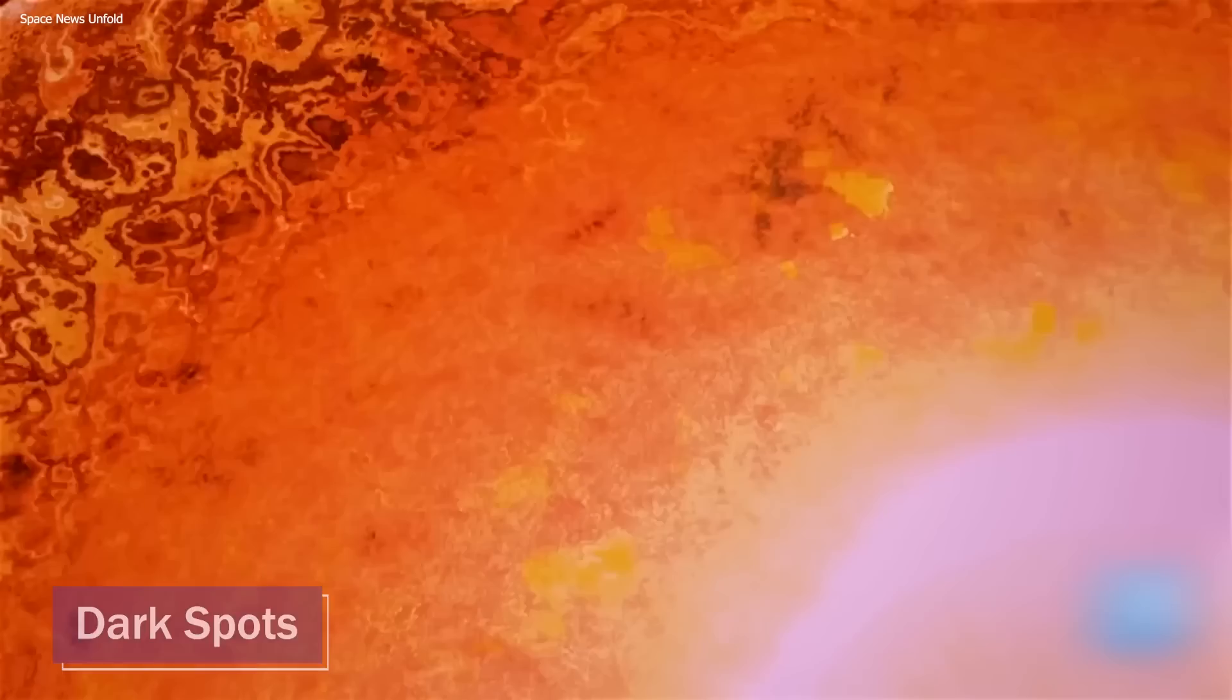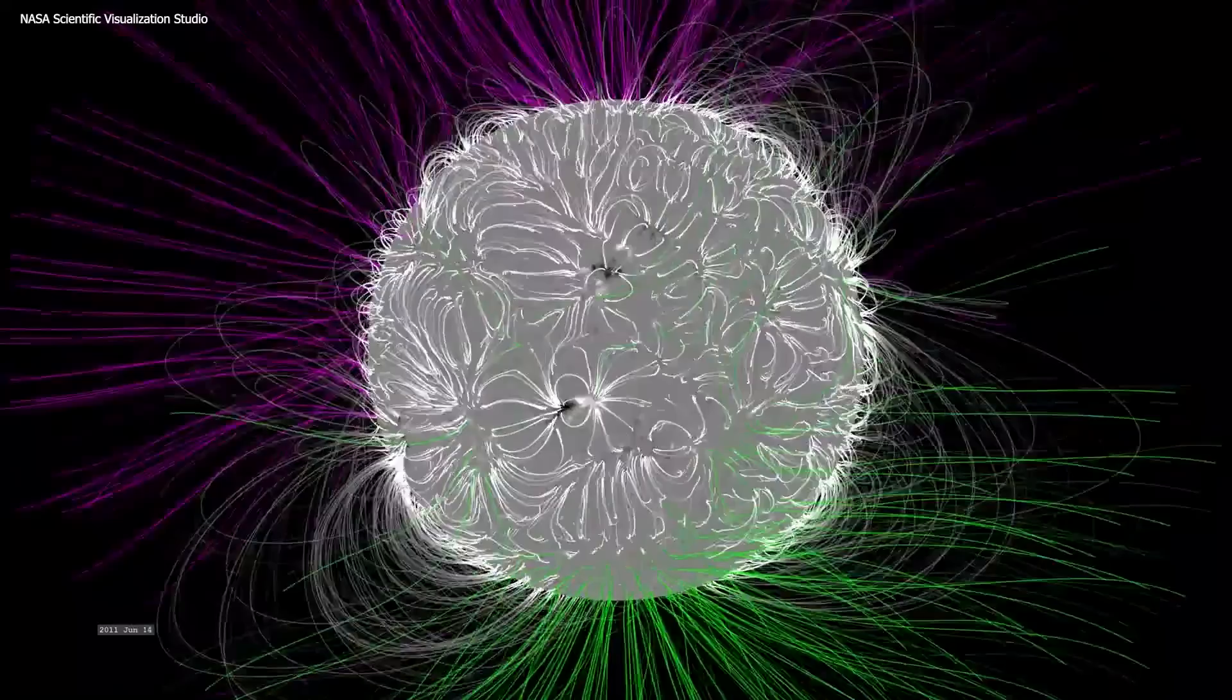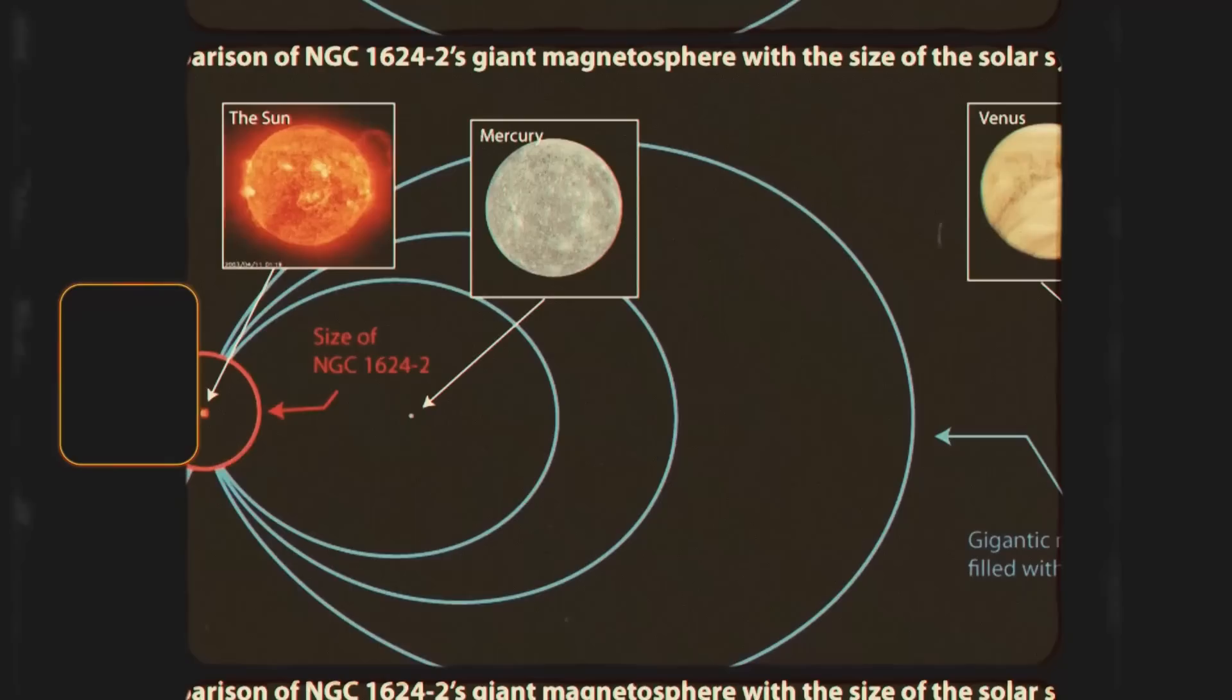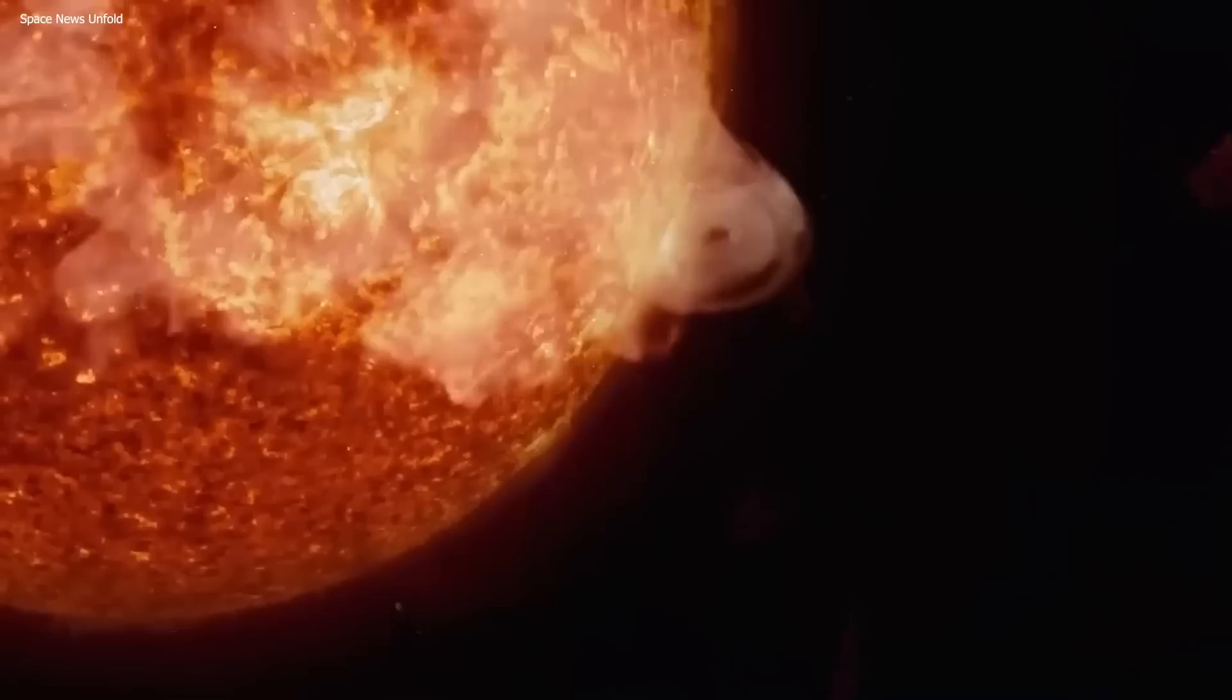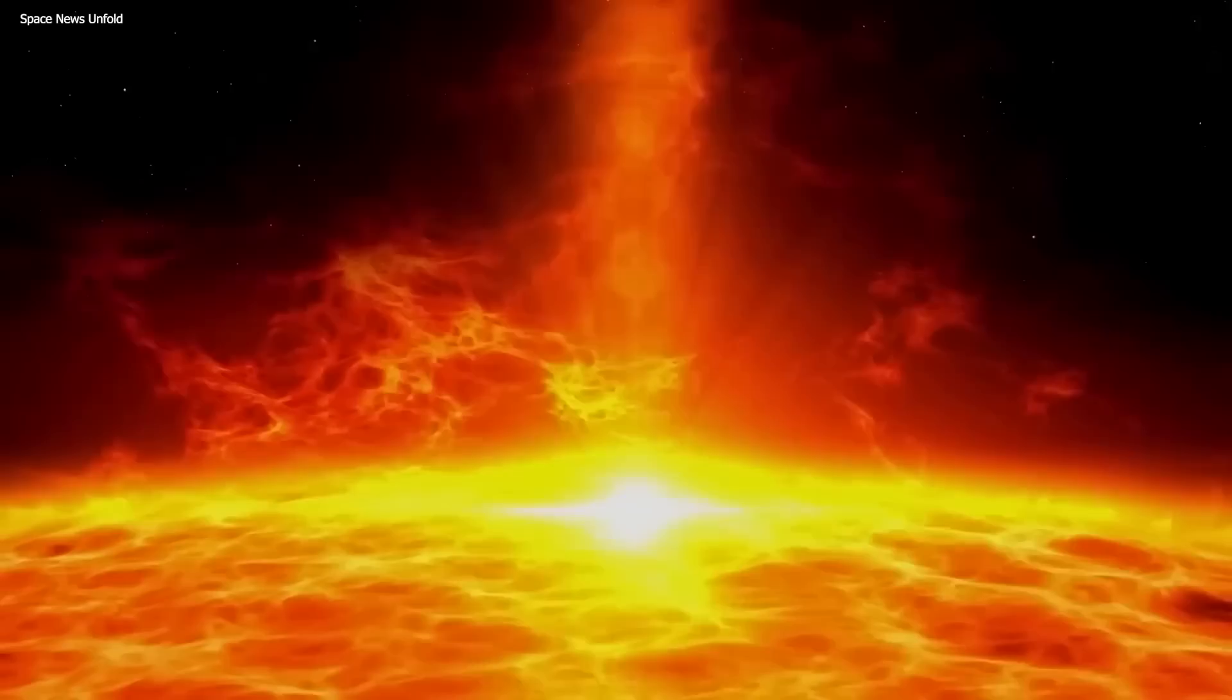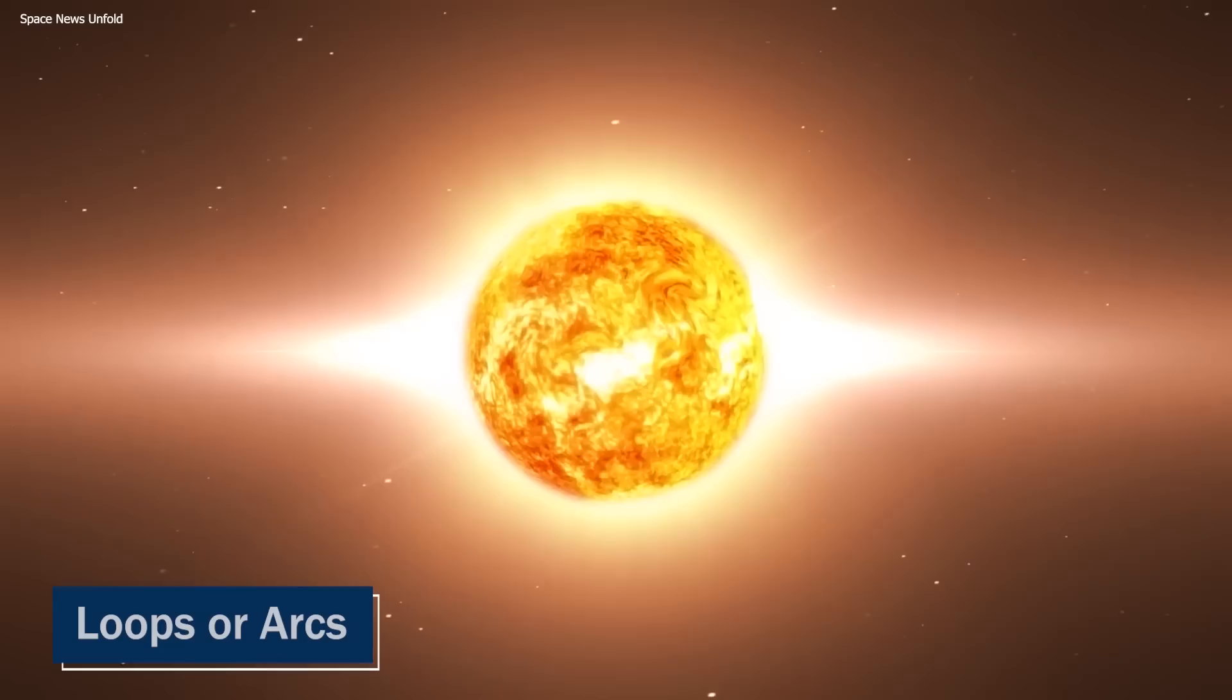Betelgeuse's surface is also covered in dark spots, also known as star spots or magnetic spots, which are areas on the surface of the star where the magnetic field is particularly strong. These regions are cooler than the surrounding gas because the magnetic field inhibits the flow of hot gas from the star's interior to its surface. This creates a sort of cooling effect that makes the spots appear darker than the surrounding gas. The magnetic field on Betelgeuse is believed to be several thousand times stronger than the magnetic field on the sun. This strong magnetic field causes gas on the surface of the star to become trapped in loops or arcs, creating regions of intense magnetic activity that are visible as dark spots.